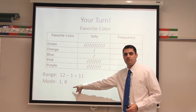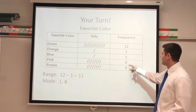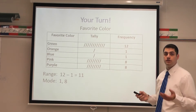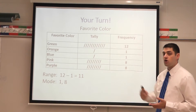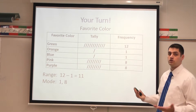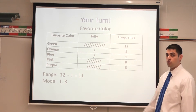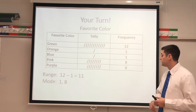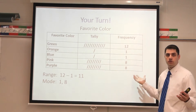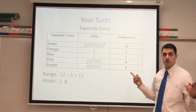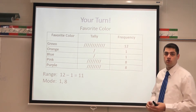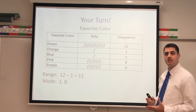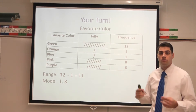Looking at the mode — hopefully I didn't trick you guys — if we look at our data set, I see that 1 occurs twice and 8 occurs twice. So in this case there are actually two modes: 1 and 8 both occurred the most often. Now I could have 3 modes or 4 modes depending on your data set. Or sometimes you might have no mode — if everything occurred only once, I wouldn't list every single number as your mode, there would just be no mode. Hopefully you were able to see that 1 and 8 occurred the most often.